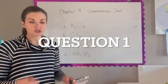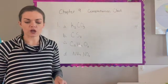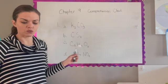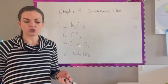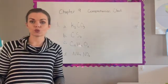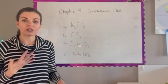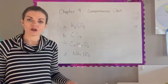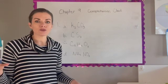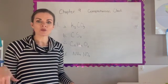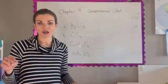The first question on the comprehension check gives you a list of solids dissolved in water, and for each solute we need to identify what specific substances are in the solution and whether the solution would conduct electricity. To determine this, we need to look at whether these are ionic compounds or covalent compounds. Ionic compounds contain a metal and a non-metal; covalent compounds contain only non-metals.